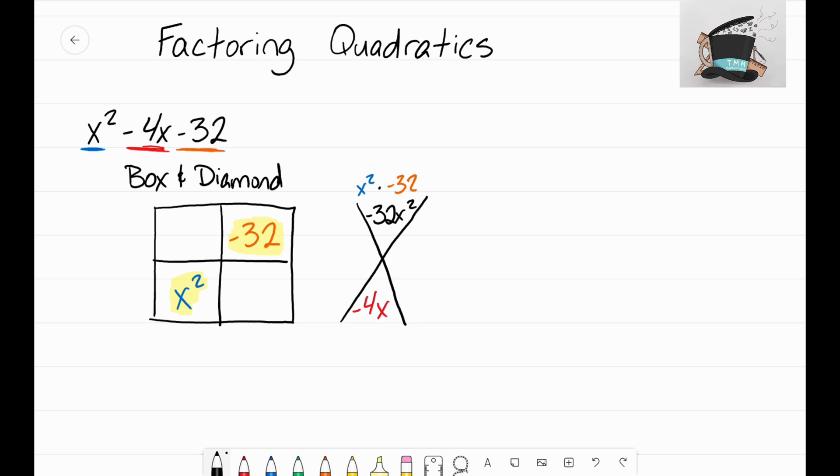So now is the point where we want to use the diamond problem to figure out what these two terms on the side are going to be. Those two terms need to add up to negative 4x, but they also have to multiply to negative 32x².